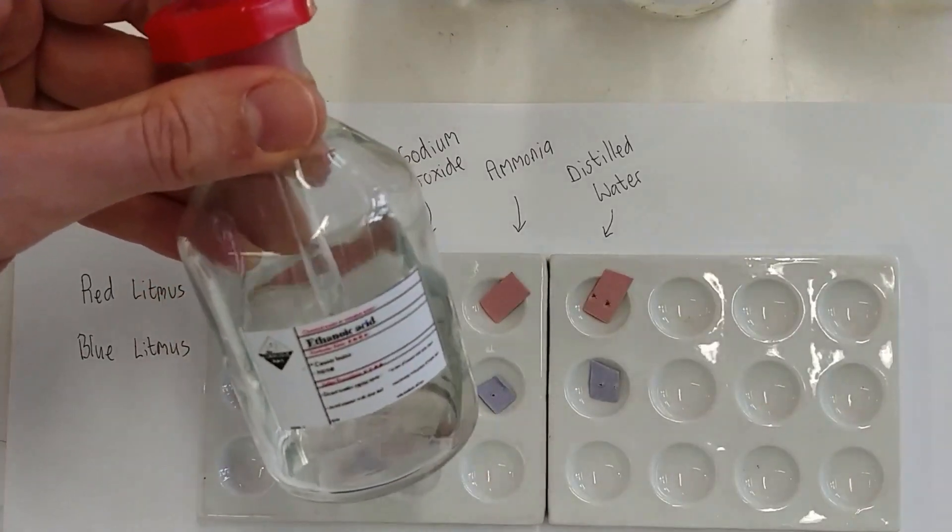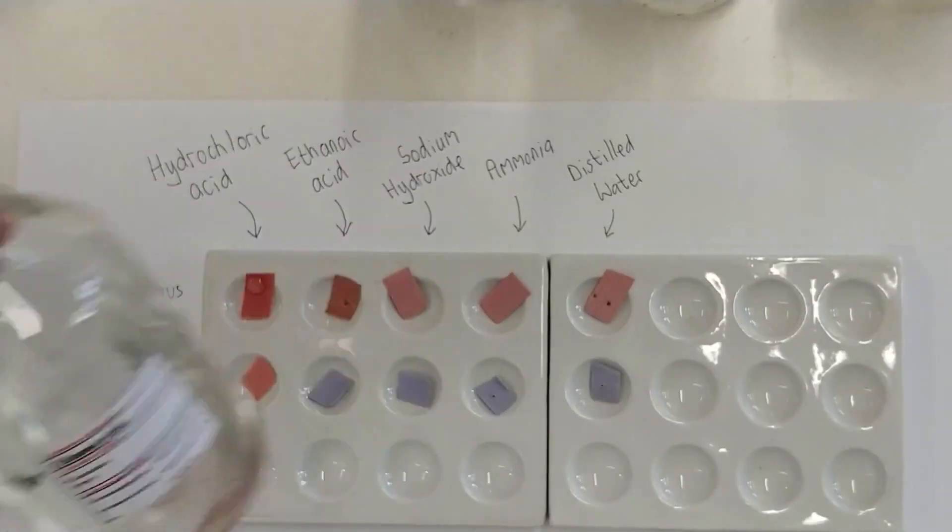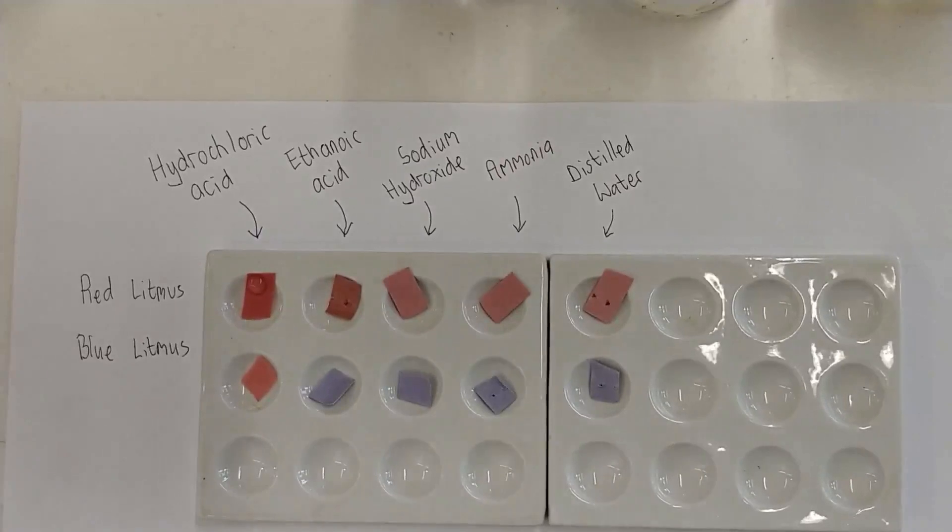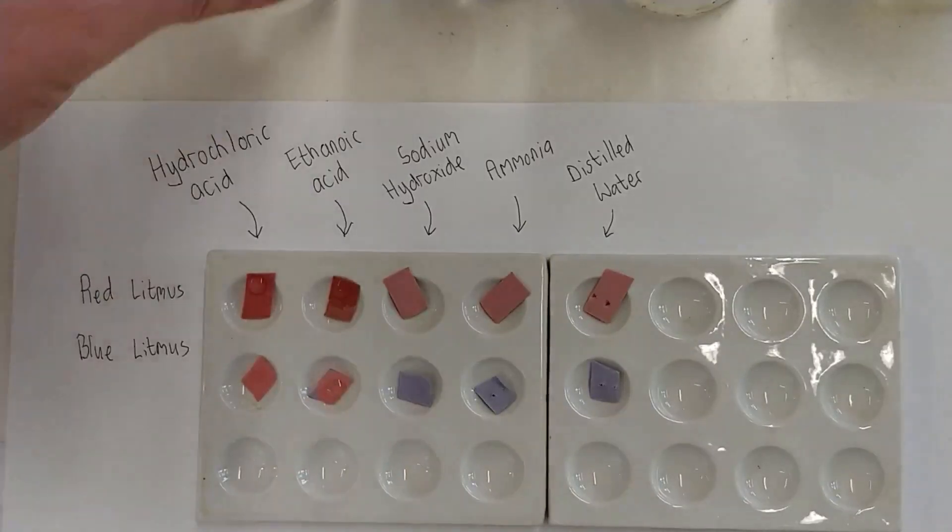So on with the second one. Ethanoic acid, more commonly known as vinegar. Drop it on the red one, drop it on the blue one, and it changes the blue one red.